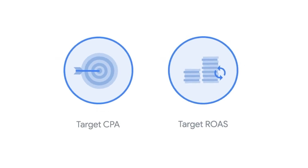Just by choosing the wrong target ROAS or target CPA, this can have a more detrimental effect on your total Google Ads performance when compared to other optimization actions like your ad copy, your images, or even your product titles.